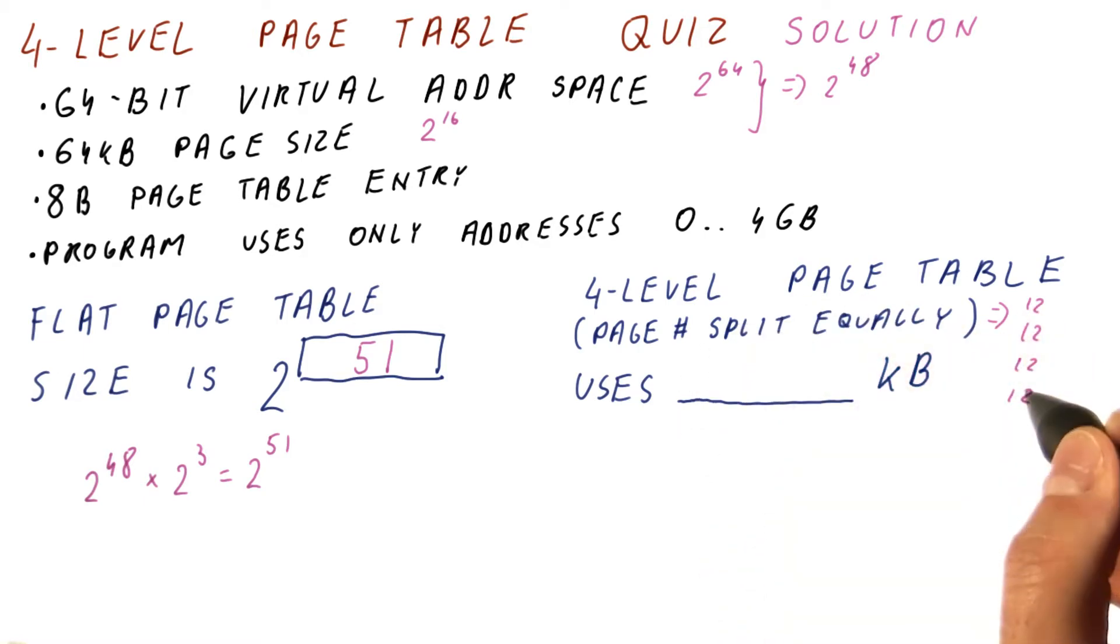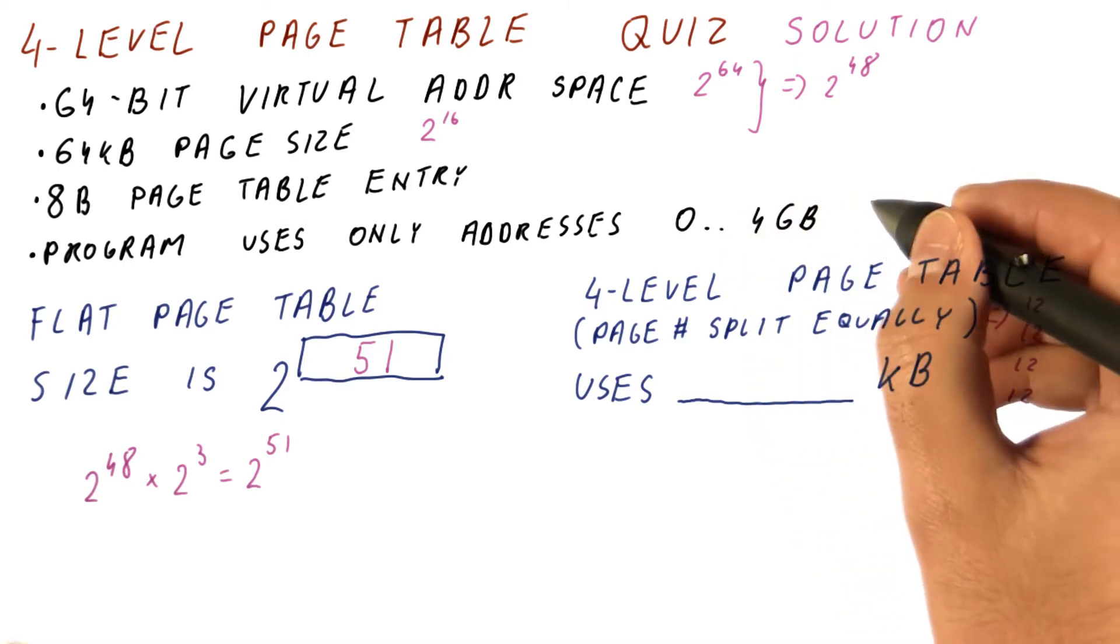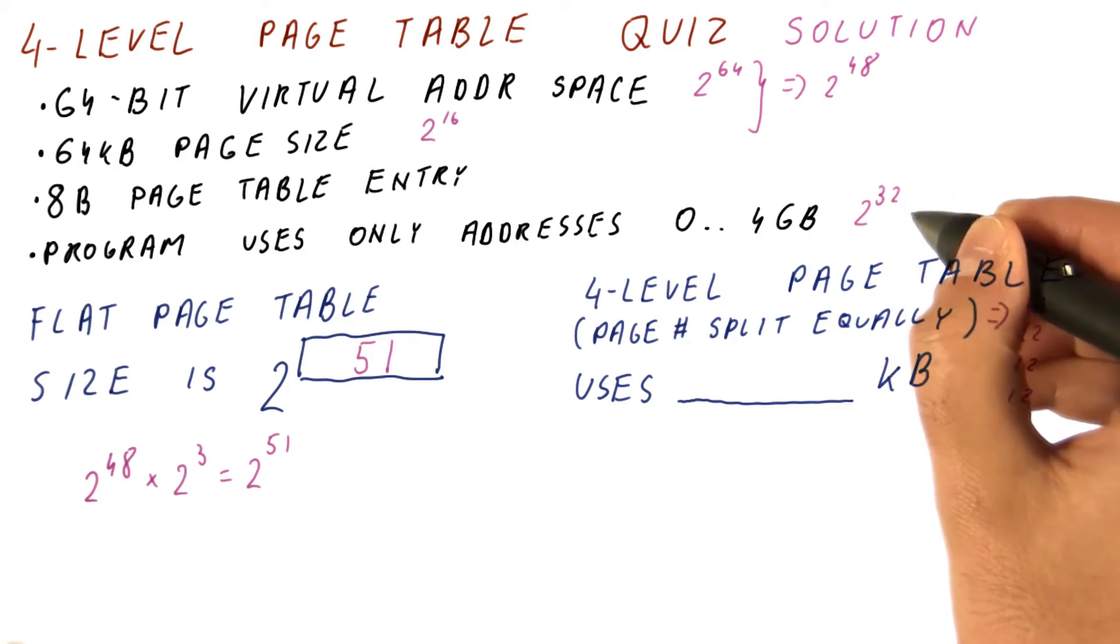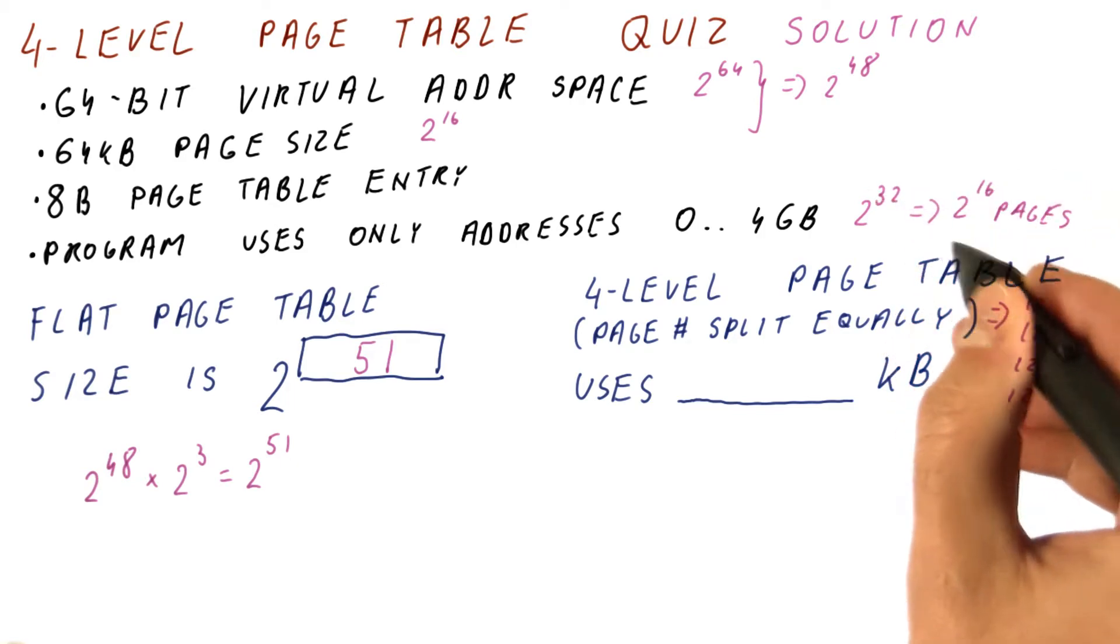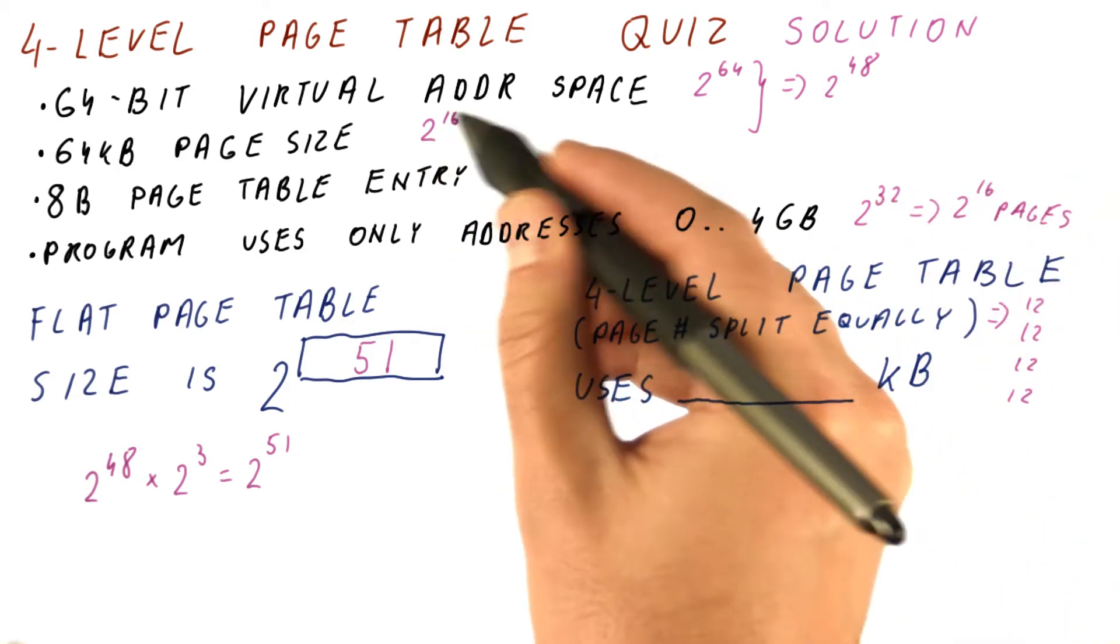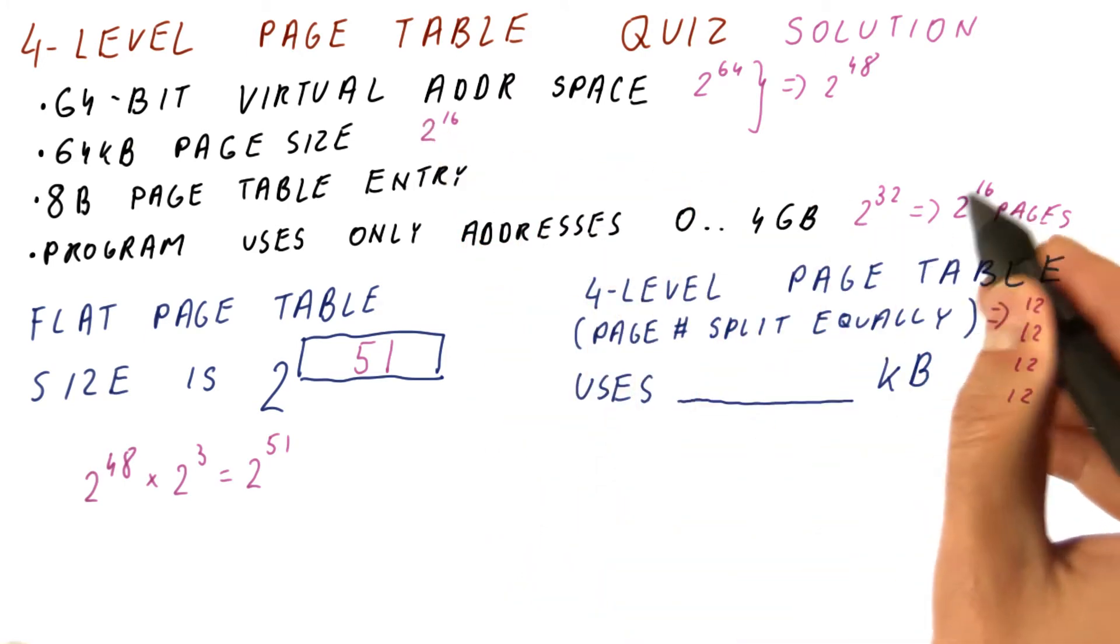The easiest way to figure out how large the overall page table is, is to figure out how many innermost page tables we have. Four gigabytes worth of memory is 2 to the 32nd bytes, which is 2 to the 16th pages of this size. So we have 2 to the 16th pages.